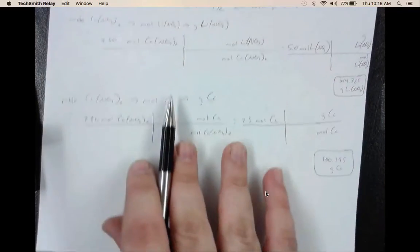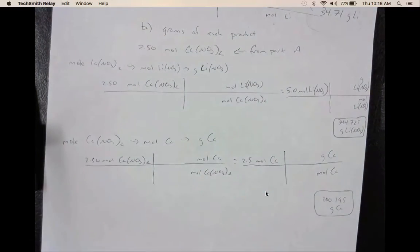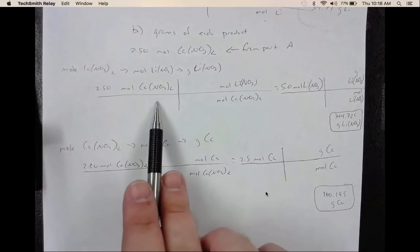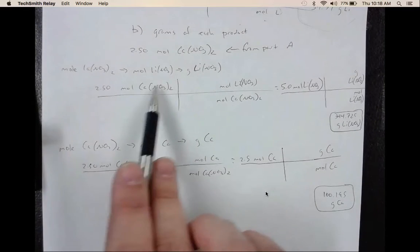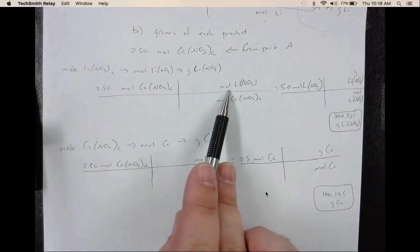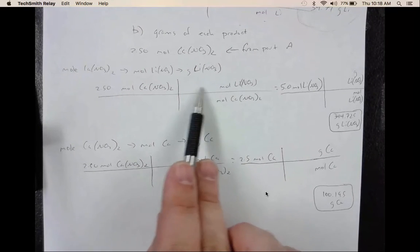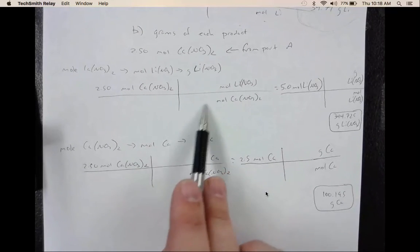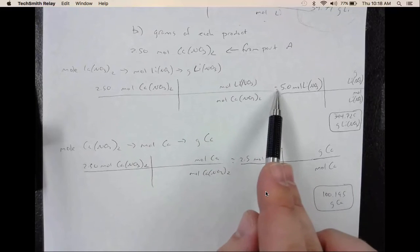And then after you're in moles of the products, you can go to grams. So that's what you see me do right here. The first fraction, I'm going from moles of calcium nitrate to moles of my first product, lithium nitrate. Remember, these values will be the coefficients. You should get 5.